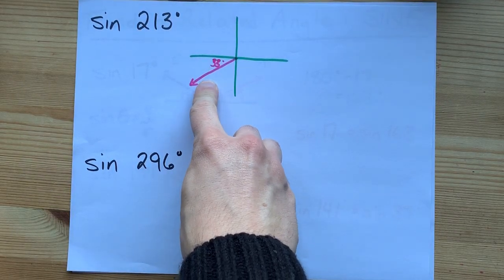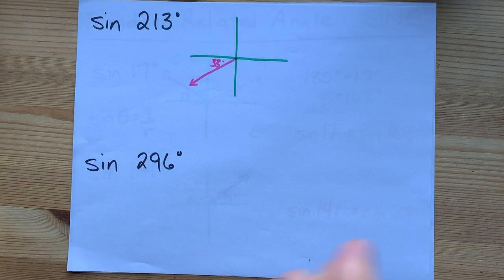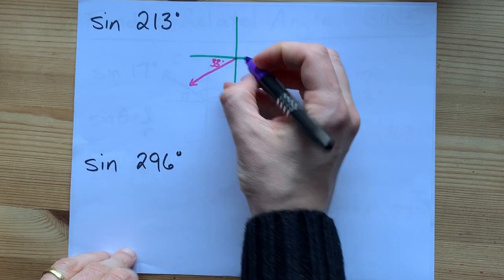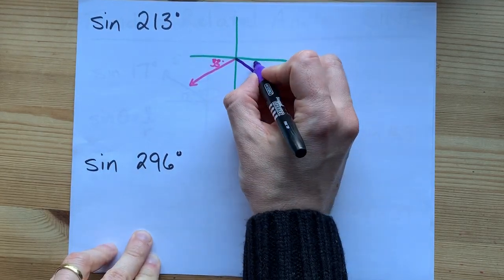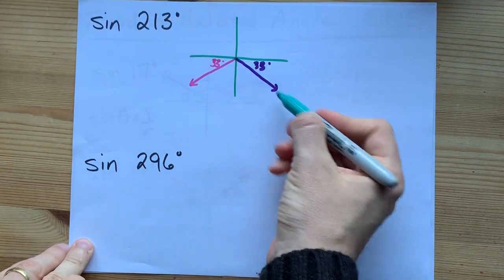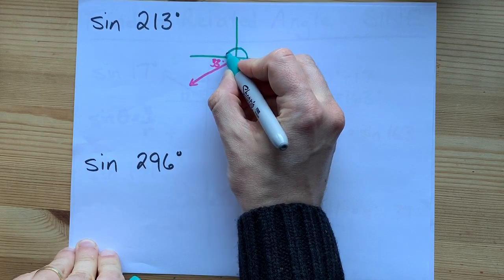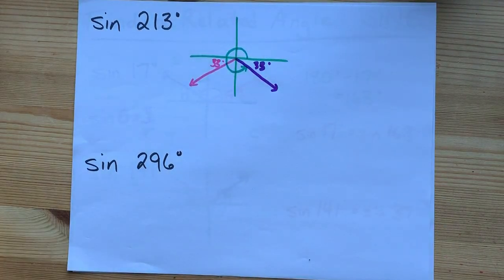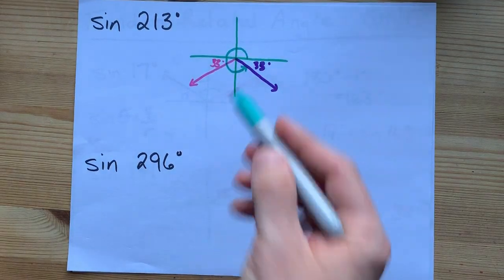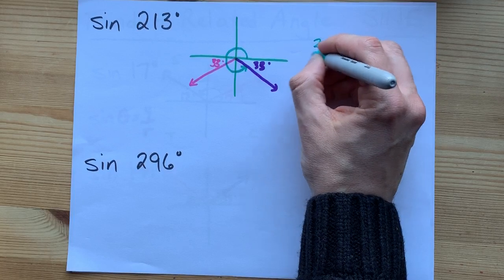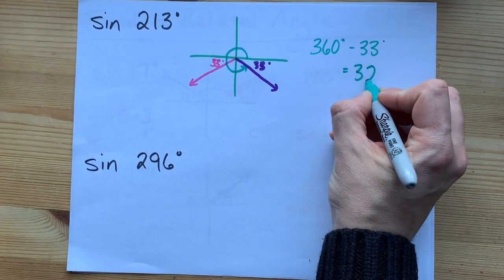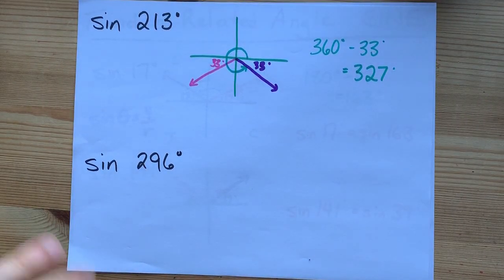Sine is negative there. Where else is sine negative? Sine is y over r, so it's got to be on the same side of the x-axis. The answer is here. That's got to be a 33 degree angle. And how big is the angle that lands your terminal arm there? It starts all the way over here and curves all the way around to there. You are 33 degrees short of 360, like a full circle. So your answer here is 360 minus that angle of 33. I got 327.